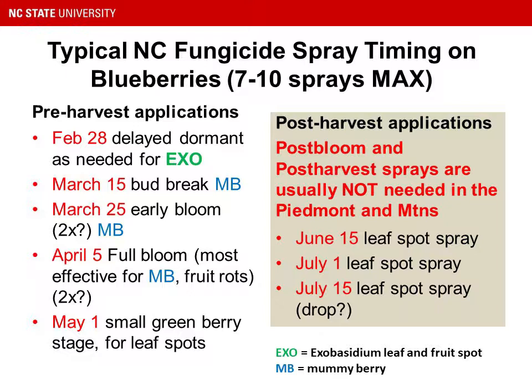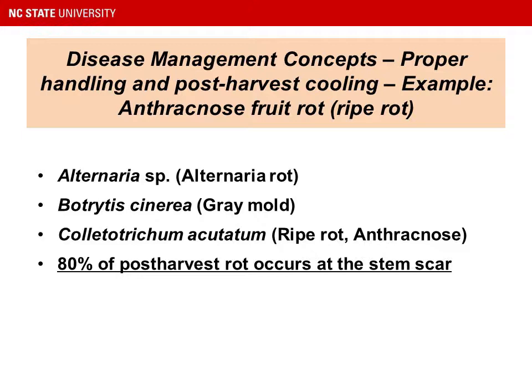Post-harvest cooling and proper handling are necessary to avoid having moldy blueberries in the grocery store. Our example of this disease management concept is anthracnose fruit rot or ripe rot. The three organisms that cause post-harvest rot on blueberries most commonly are Alternaria, Botrytis or gray mold, and Colletotrichum or ripe rot. Eighty percent of the post-harvest rot seen on blueberries in the grocery store occurs at the stem scar of the berry, meaning that the rot occurred after the berry was picked, because the stem scar is not exposed until the berry is harvested. Handling of fruit post-harvest is really critical for controlling these post-harvest rots.